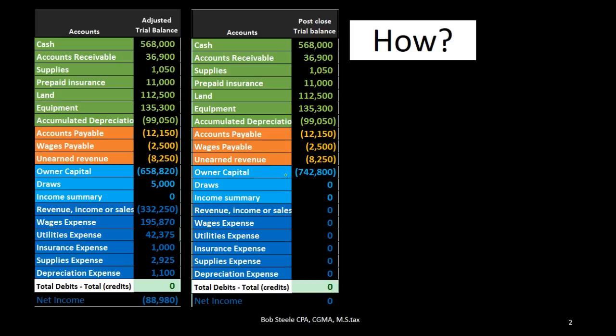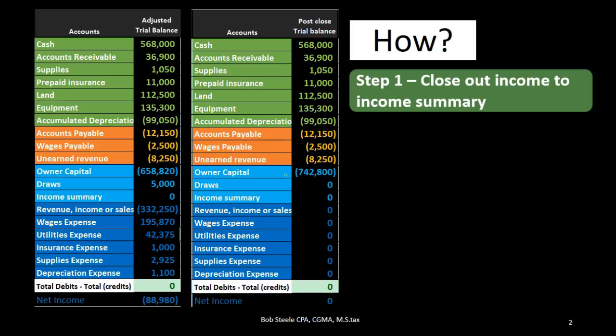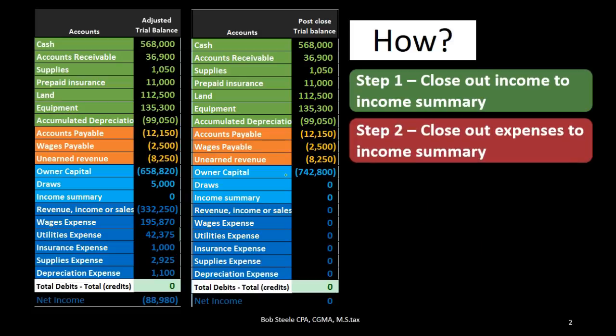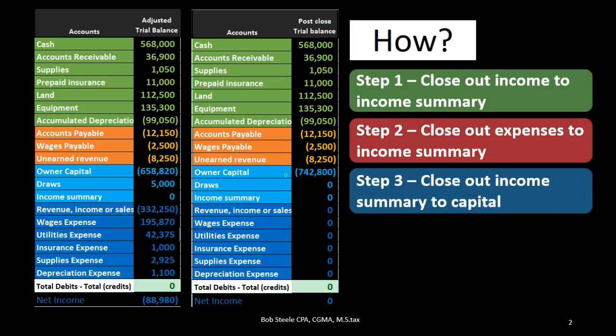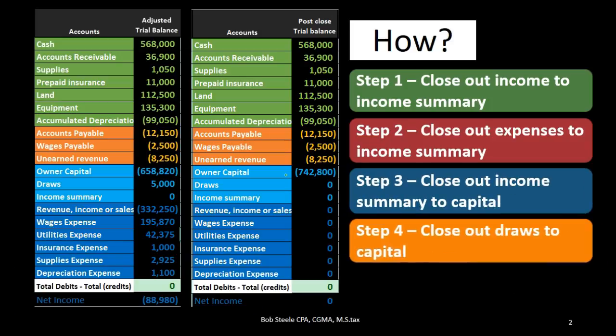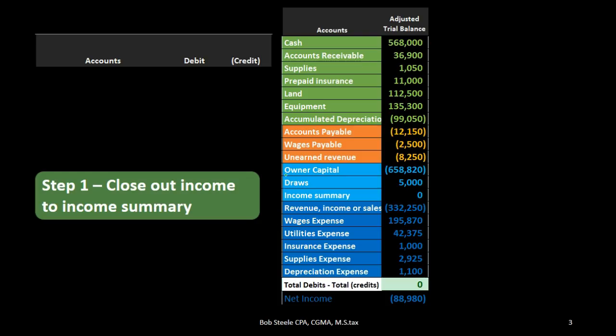We talked about how we were going to do that with a four-step process: close out the income to the income summary, then close out the expenses to the income summary, then close out the entire income summary to the capital account, and finally close out draws to the capital account. We're going to start off with step one of those four steps.